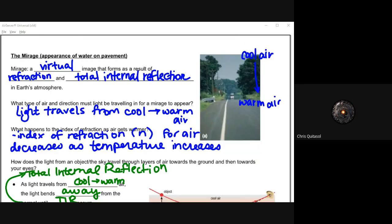The next one we'll talk about is a mirage. This is the appearance of water on pavement. This is a cool one because it's a virtual image that forms as a result of refraction, as well as total internal reflection of the earth's atmosphere. Cooler air up top and warmer air on the bottom. Usually, if you've ever seen it in the middle of summer on really hot asphalt roads, they've absorbed a lot of heat and energy. So the air closer to the asphalt is warmer than the air above the asphalt.